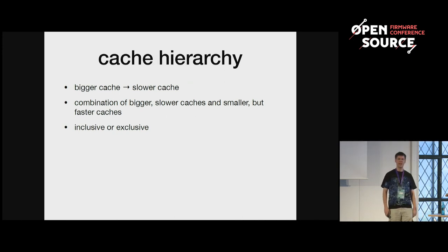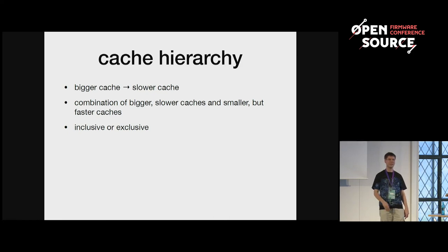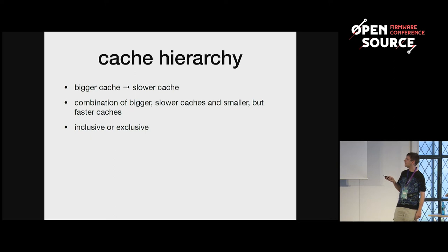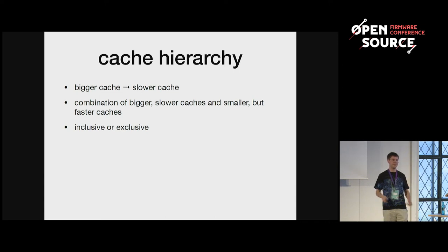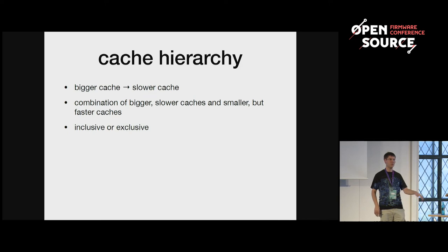In modern computer architectures you usually have multiple levels of caches. If the memory is bigger, the latency gets higher. So you use a combination of smaller and faster memory nearer to the processing elements, and bigger and slower memory farther away, nearer to the DRAM. If the cache is inclusive, the next higher cache levels always contain the data that's in the lower cache levels — that's used on most systems. There's also the exclusive strategy, where a cache line, when it gets moved from a higher-level cache to a lower-level cache, is moved there and not kept in the higher-level cache.